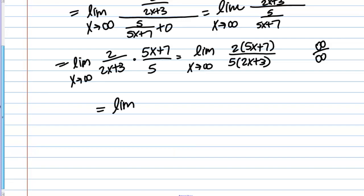L'Hopital's rule says that I take the derivative of the top and bottom. The derivative of the top I can leave the 2 out front and the derivative of 5x plus 7 is 5. On the bottom I can leave the 5 out front and the derivative of this is 2.